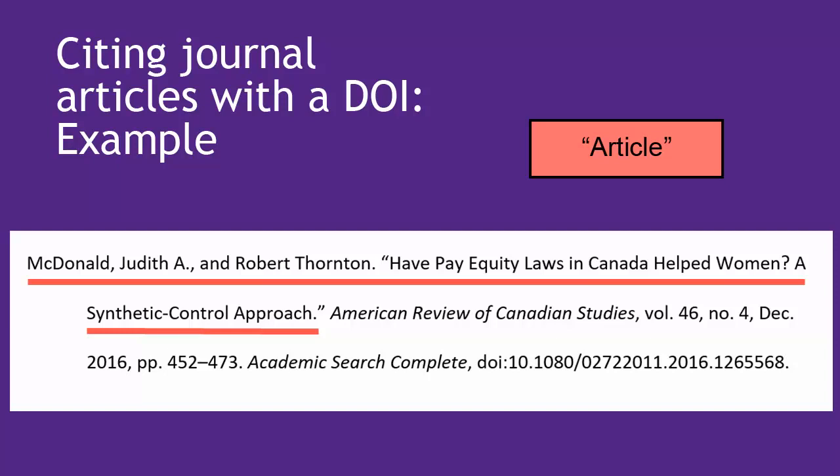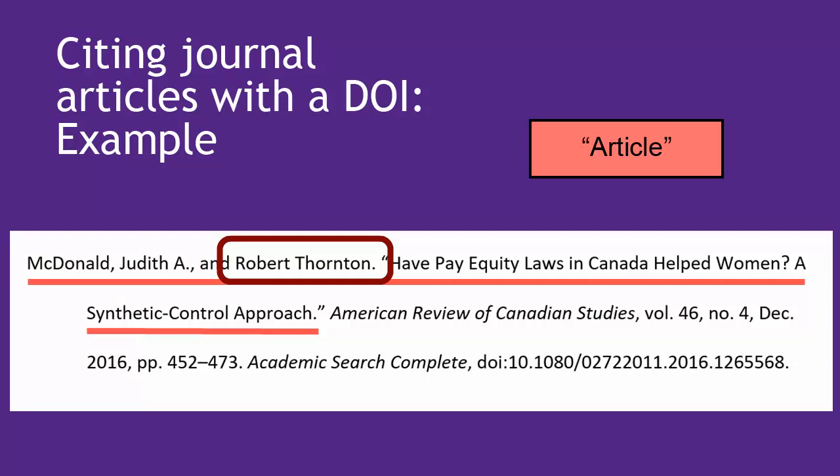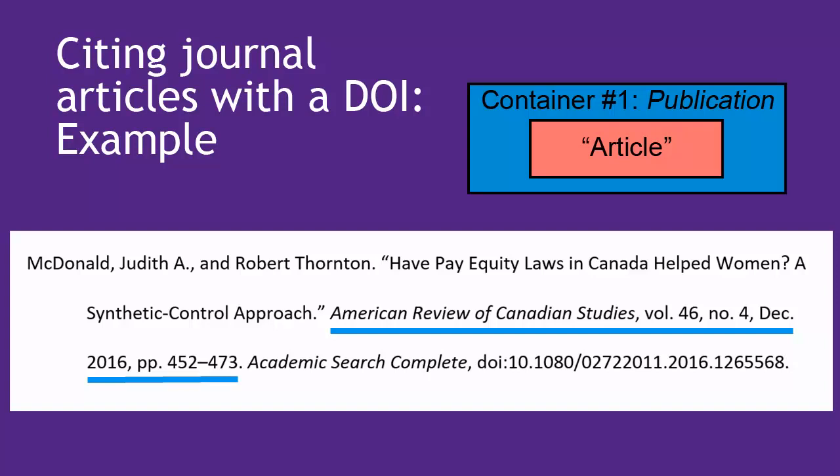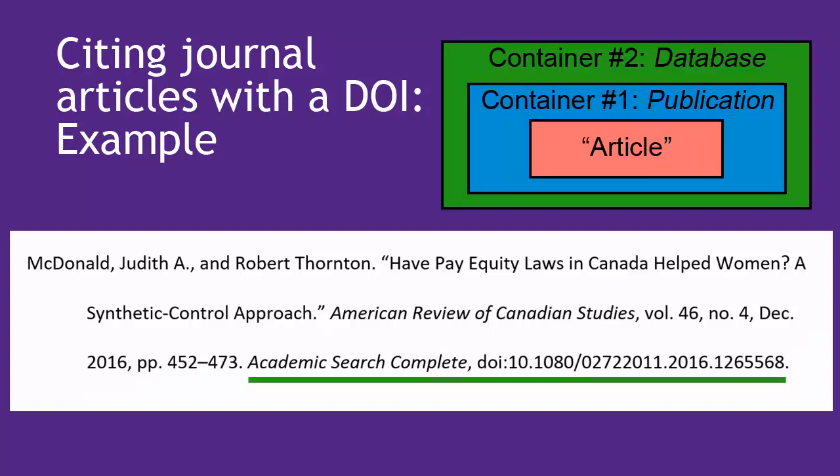Now we can make a citation for our article from a database with a DOI. When we have multiple authors, we do last name, first name for the first person — plus middle initial because she includes that — then the following authors are first name, last name. The first container title, American Review of Canadian Studies, is in italics, then list vol. 46, no. 4, December 2016, and the page range. Then the second container is the database name — I got this one from Academic Search Complete. If we truly can't find the database name, it's acceptable to use the vendor name, such as ProQuest or EBSCOhost. Last is the DOI: write a lowercase "doi", colon, no space, and then the numbers starting with 10.